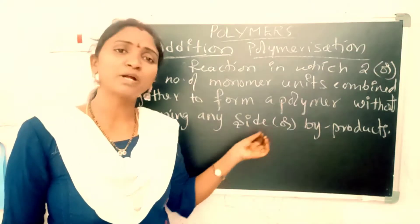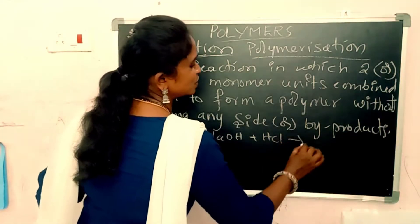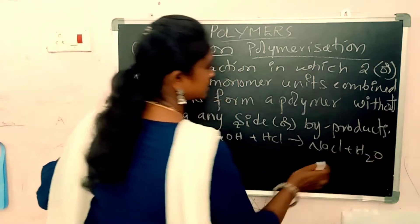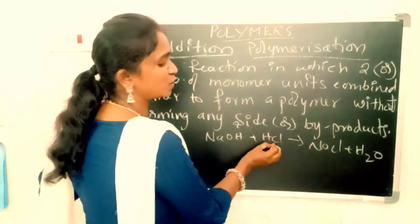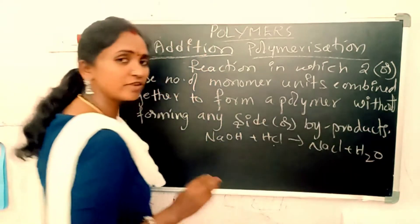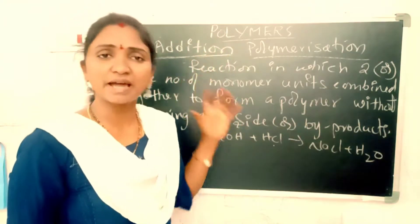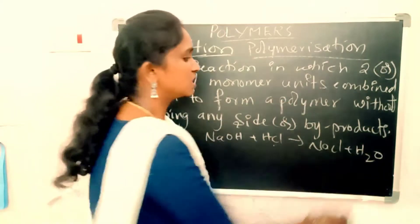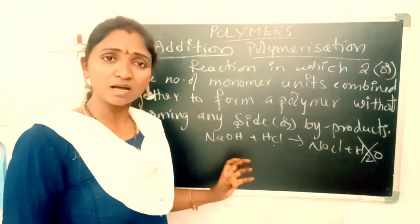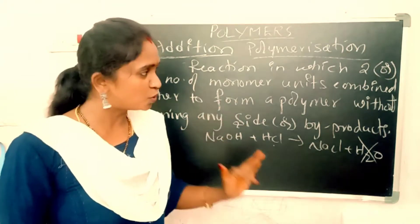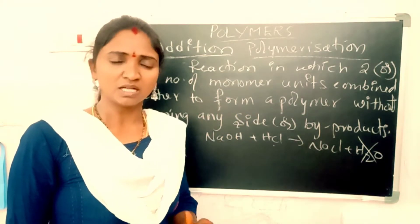For example, consider the chemical reaction: NaOH plus HCl gives NaCl plus water. Here, sodium chloride is the main product and water is the byproduct. In the same way, when a polymer is formed in addition polymerization, there is no byproduct formation — all monomers are converting into polymer only.